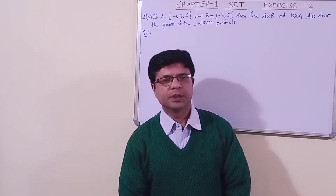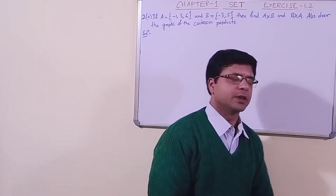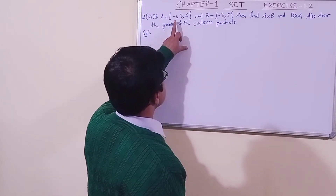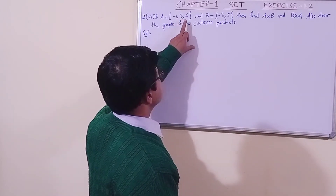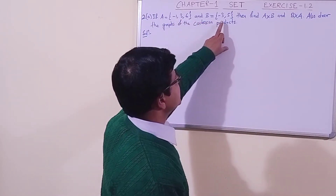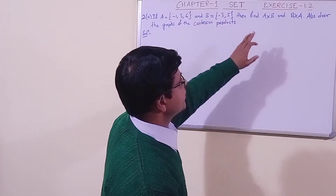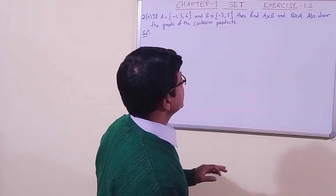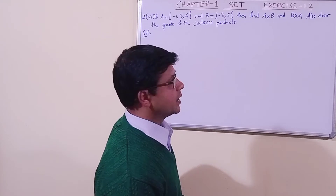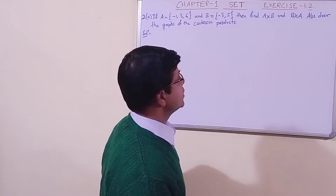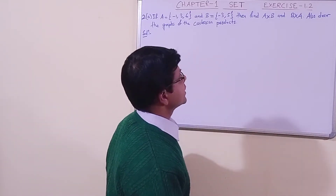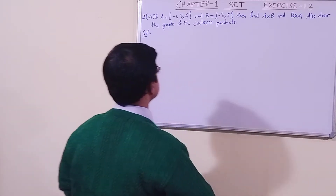Now students, we have taken question number 2. Let us look at the question: if A has three elements {-1, 3, 6} and B has two elements {-3, 5}, then find A cross B and B cross A. The second part is also to draw the graphs of the Cartesian product. First let us find A cross B.